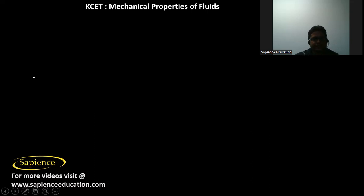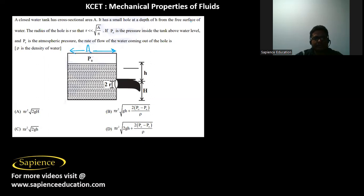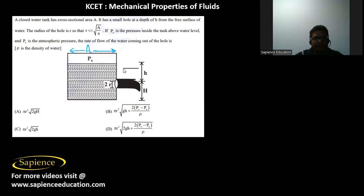The next question: a closed water tank has cross-sectional area A, and has a small hole at a depth H from the free surface of the water. The radius of the hole r is much less than √(A/π). P₀ is the pressure inside the tank above the water level, and pA is the atmospheric pressure acting near the hole. We need to find the rate of flow of water coming out of the hole.